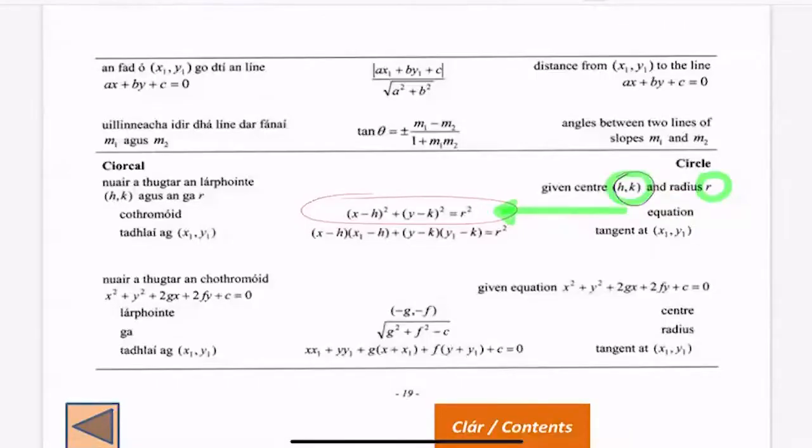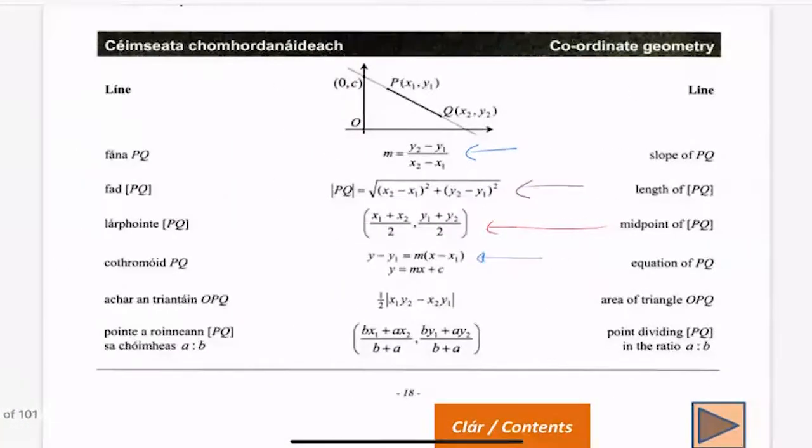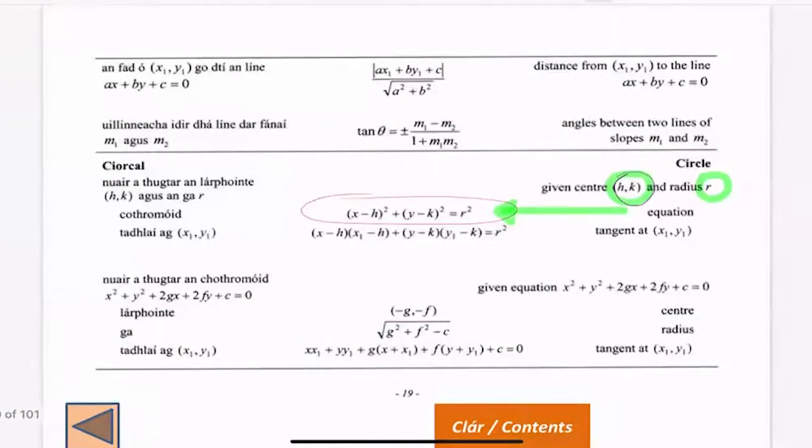So write down the equation of a circle. Straight to the log tables page 19. Page 18 and 19 is coordinate geometry. The line is mainly on page 18 and then the circle is here, mainly just this top piece you need for the ordinary level course. So the equation of a circle (x - h)² + (y - k)² = r². Given the center hk, so whatever the center is of your circle you label hk and your radius is r.